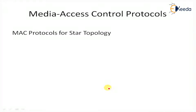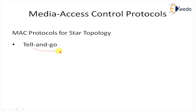Next we will define MAC protocols for the most important topologies. First, MAC protocols for star topology. The MAC protocol for star topology is described according to several criteria. The first criterion is Tell-and-Go: a MAC protocol that supports this feature allows a station to inform the destination that it is transmitting a packet and then transmit the packet without waiting for any form of acknowledgement.